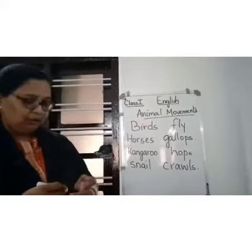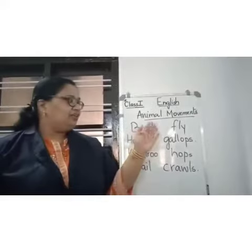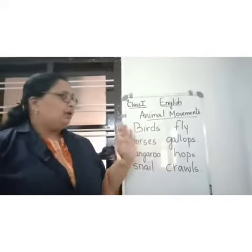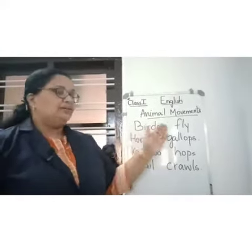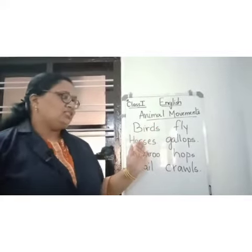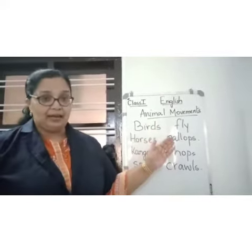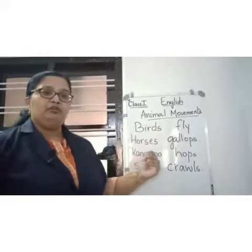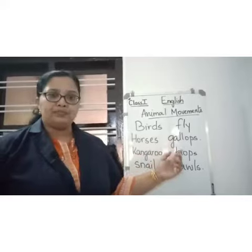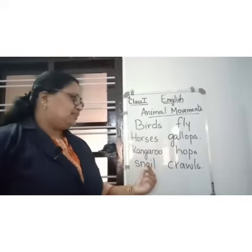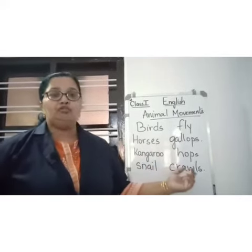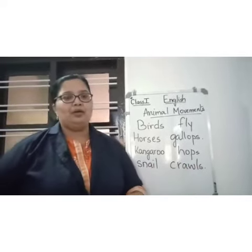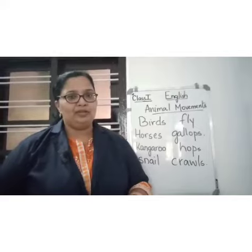So we have these four movements here: birds fly, horses gallop, kangaroo hops, and snail crawls. I hope you have followed the class.